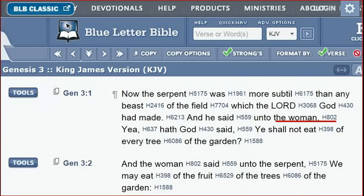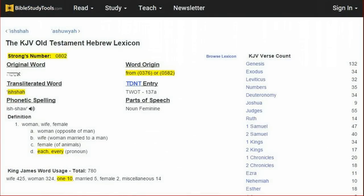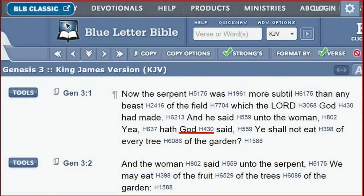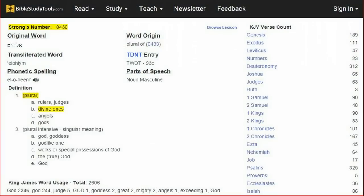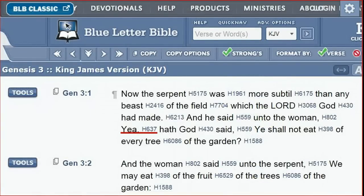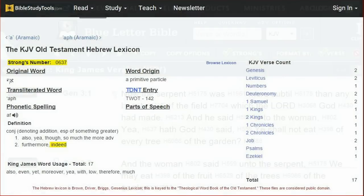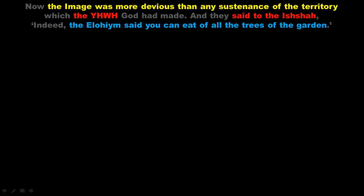The word translated as 'woman,' number 802, is the Hebrew word ISHAH. The texts make clear that the ISHAH cannot represent humans but instead means 'certain one.' In the Genesis 2 context, it refers to the hybrids that YHWH made to mate with the humans. The word translated as 'God,' number 430, is ELOHIM, referring to the creators of the earth. The word YEH, number 637, also means 'indeed.' So an alternate translation of Genesis 3:1 says: 'Now the image was more devious than any sustenance of the territory that the YHWH God had made, and they said to the ISHAH: Indeed, the ELOHIM said you can eat of all the trees of the garden.'